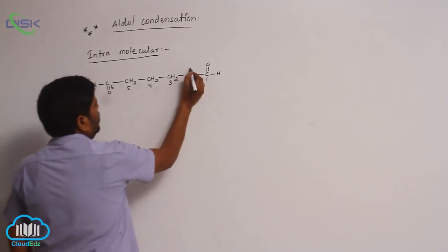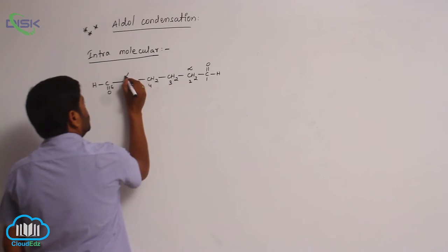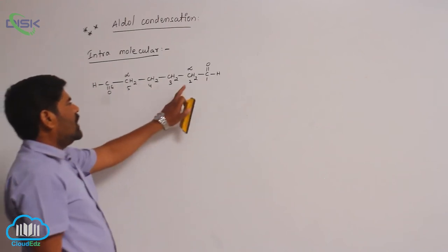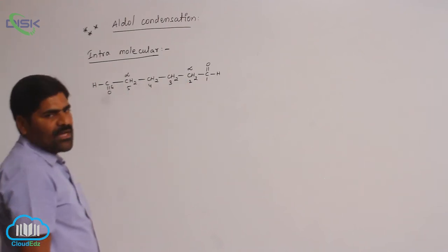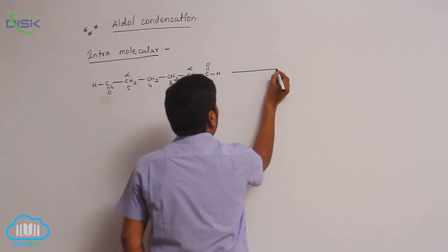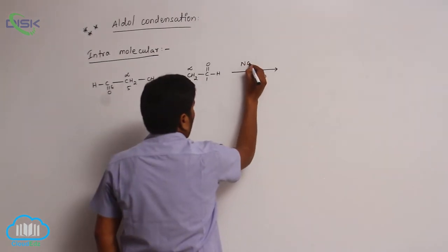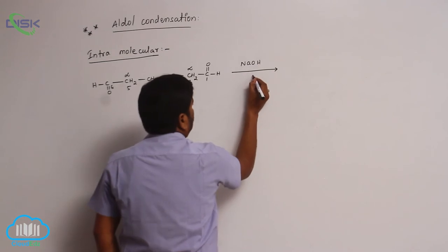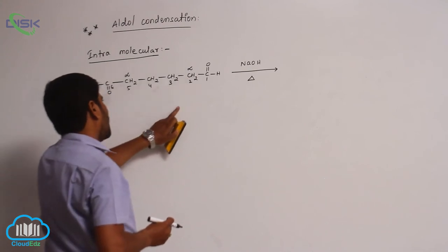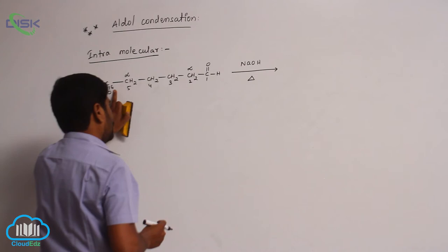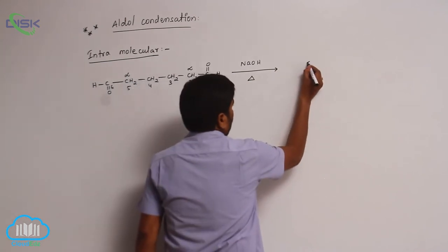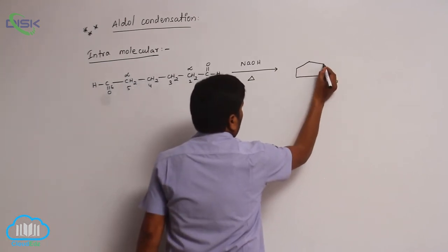Both the second and fifth carbons are alpha carbons, and they are identical. Any one of the hydrogen atoms at these alpha carbons is abstracted by using a base. If you are using sodium hydroxide followed by heating and a proton is abstracted from the second carbon, a carbanion is generated, which then attacks the aldehyde carbon. The second carbon and sixth carbon are joined, so a five-membered ring is formed.